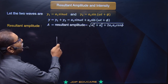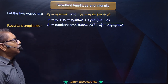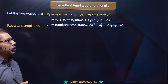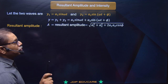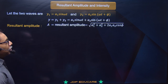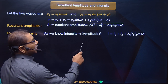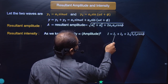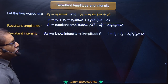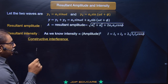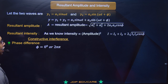Ab iska path difference nikalne ke liye mathematical analysis karte hain. Do source lete hain superposition mein. Ek wave pattern y1 = a1 sin(ωt), doosra y2 = a2 sin(ωt + φ). Phase kisi bhi oscillating aur vibrating particle ka ek aisa quantity hai jo direction of motion aur position ko batata hai. Phase difference unke difference ko batata hai. Dono ka ωt+φ aur ωt ka difference nikaloge toh phi aayega jo phase difference kehlata hai.